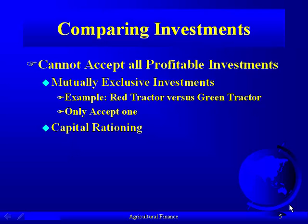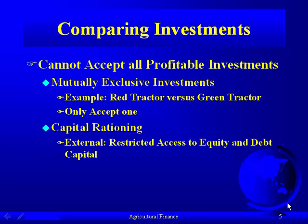The other reason you can't accept all investments is capital rationing. Part of that is external. The entrepreneurial firm in production agriculture doesn't have unlimited access to equity and debt capital. A family farm can't go out and issue corporate debt or publicly traded stock to get more capital, and since their equity is limited, banks won't give them unlimited credit. So there's external capital rationing.